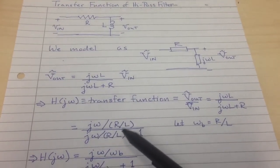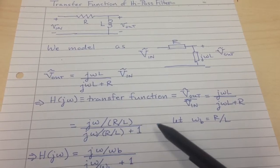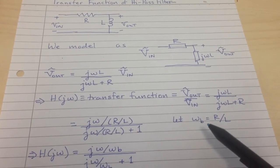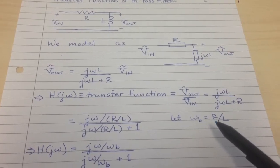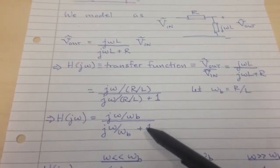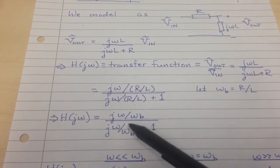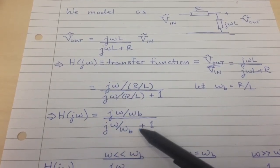If we divide both sides by R, we get this. Then we do a substitution to make it a little simpler to read. We use this omega B, which is R over L.